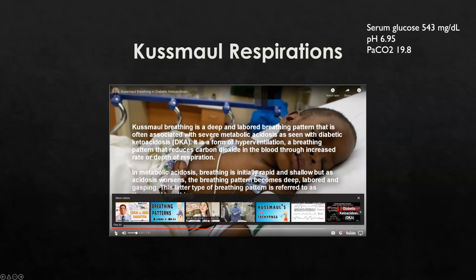Hopefully you noted that this little guy's serum glucose is 543 milligrams per deciliter and his pH is 6.95 — that is acidotic. In diabetic ketoacidosis, that is a metabolic acidosis, and he is compensating for this metabolic acidosis with hyperventilation — the Kussmaul respirations — which has his PaCO2 at 19.8. His potassium level is also starting to elevate at 5.3, and that is a result of the metabolic acidosis.